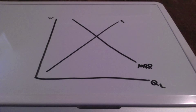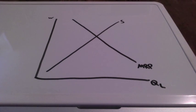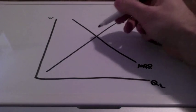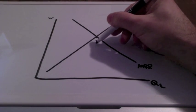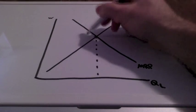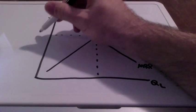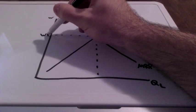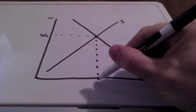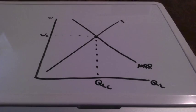The next curve is the downward sloping marginal revenue product curve — the value of extra production generated by each worker. It's downward sloping because each worker contributes less and less.